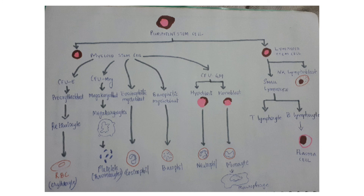The myeloid stem cell also gives rise to eosinophilic myeloblast which forms eosinophil, and basophilic myeloblast which forms basophil. CFU-GM, the progenitor cell for granulocytes, gives rise to two precursor cells — myeloblast and monoblast — which in turn give rise to neutrophil and monocyte respectively. Monocyte in turn matures into a macrophage.